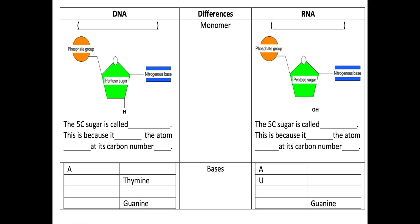To compare between DNA and RNA, we can look at several angles. The first criteria that we can look at is based on their monomers. The monomer for DNA is known as DNA nucleotide. Meanwhile, the monomer for RNA is known as RNA nucleotide.